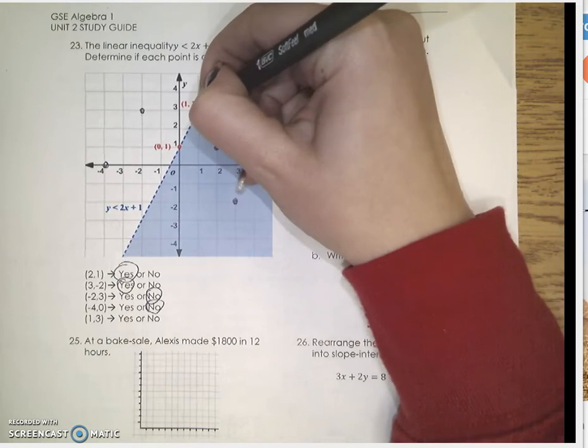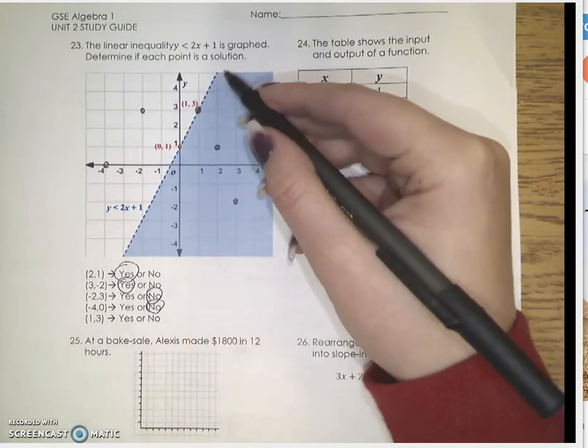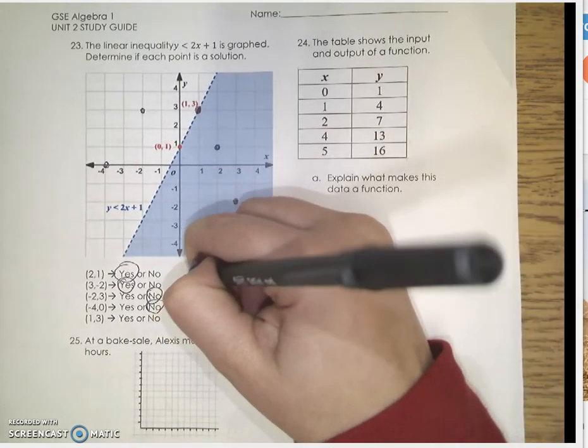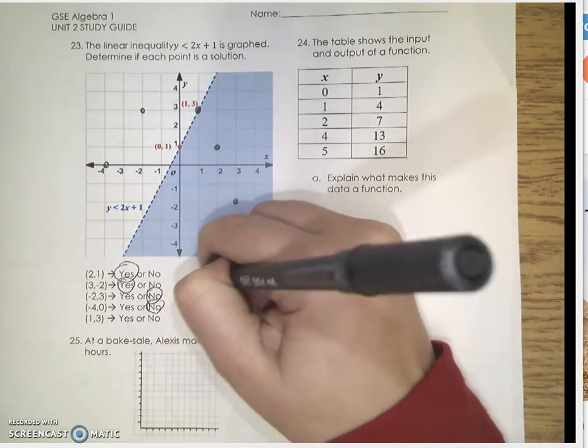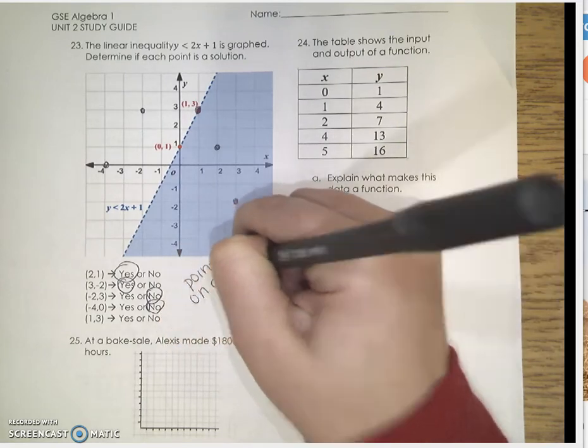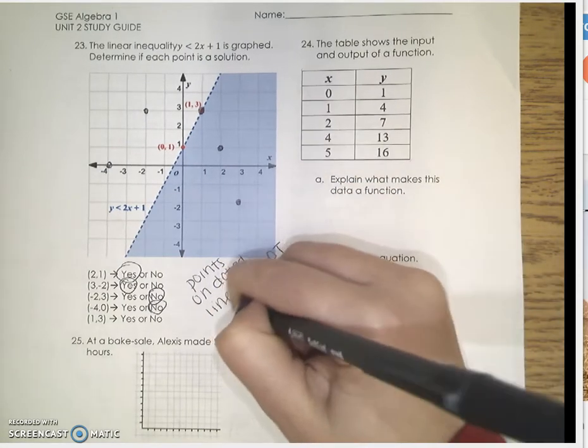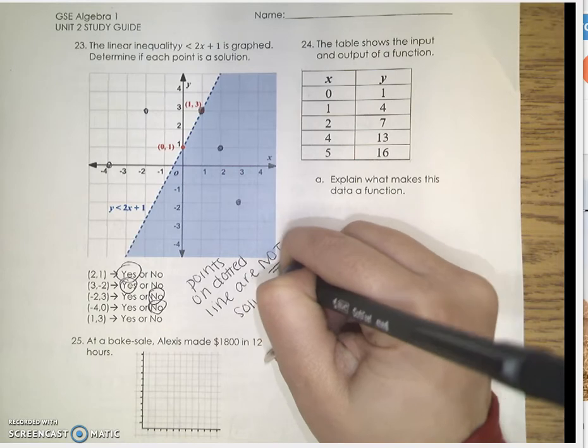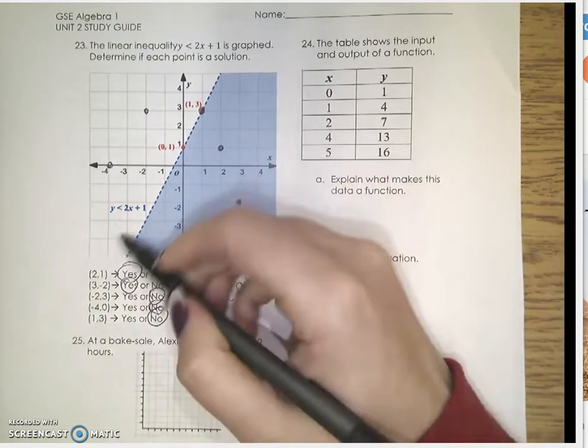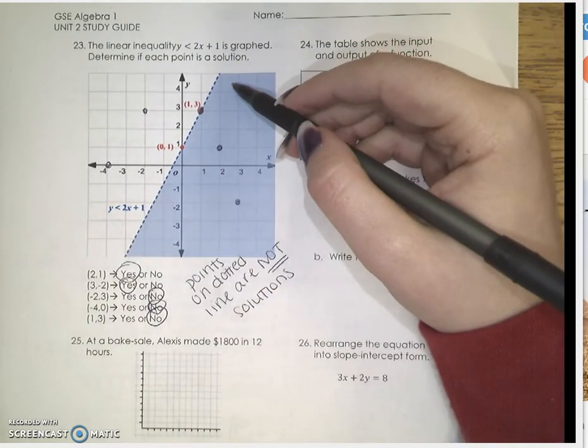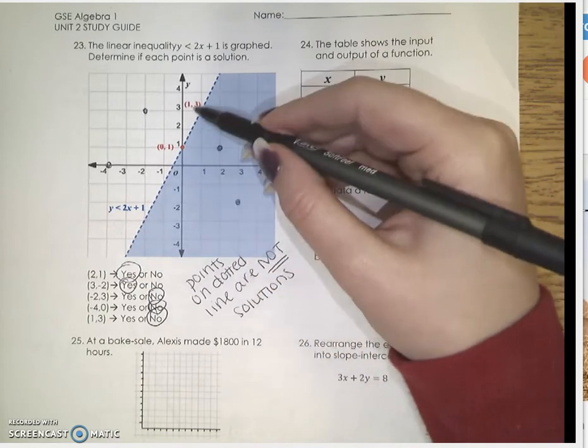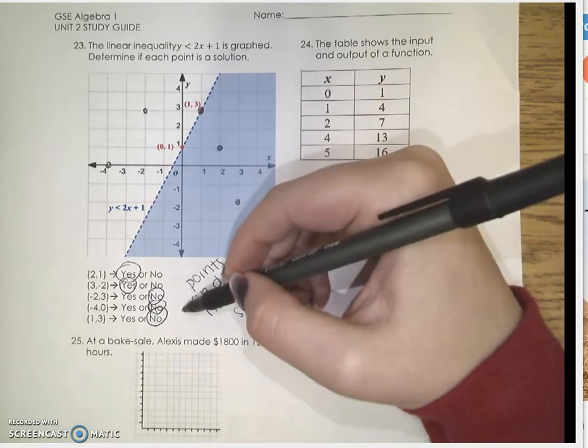And 1, 3 is on the dotted line. Points on dotted lines are not solutions. So if this were to be a solid line, it would be a solution. But because we have a dotted line, all of the points on this dotted line are not solutions.